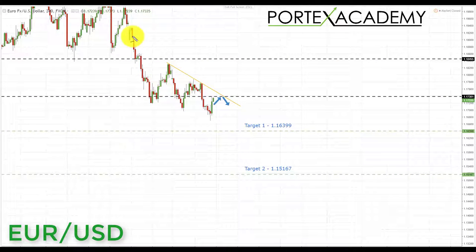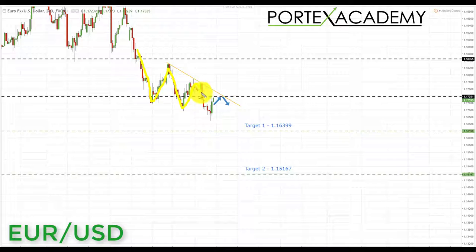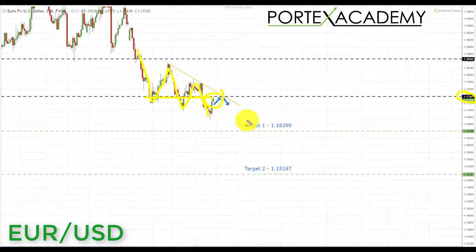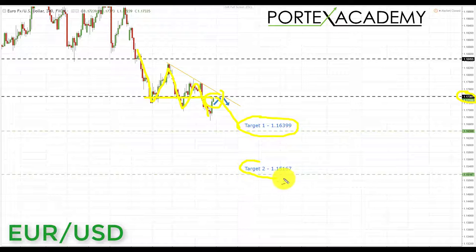Next we have the EUR/USD. The downtrend is still intact with lower lows and lower highs, so we are looking for further declines, and we are getting a correction back into the key area of support turning resistance at the 1.17381. This is a great place to look for bearish formations and patterns at this resistance area, looking for shorts down towards the first target of 1.16399, and if we can get through there, a secondary target of 1.15167.